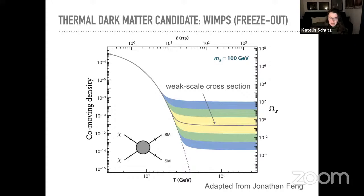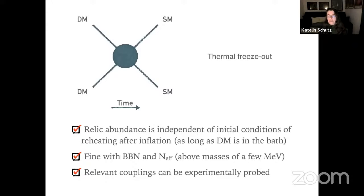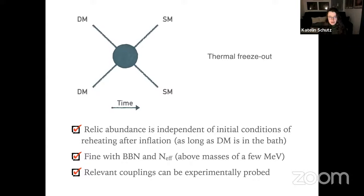One key property of thermal freeze-out is that it's independent of initial conditions. As long as a coupling sufficient to thermalize the dark matter exists, regardless of whether you start with no dark matter or too much dark matter, the system comes to thermal equilibrium. This is a very nice, predictive scenario.